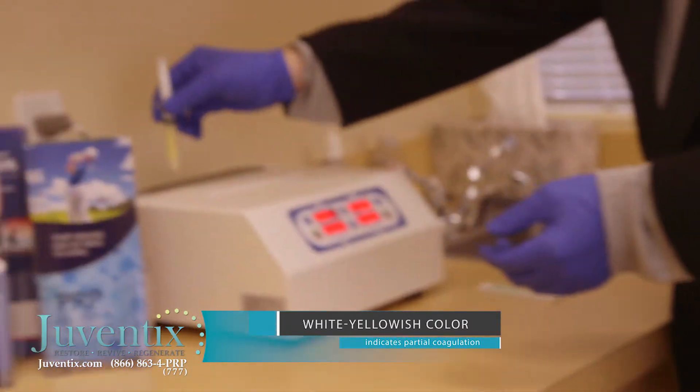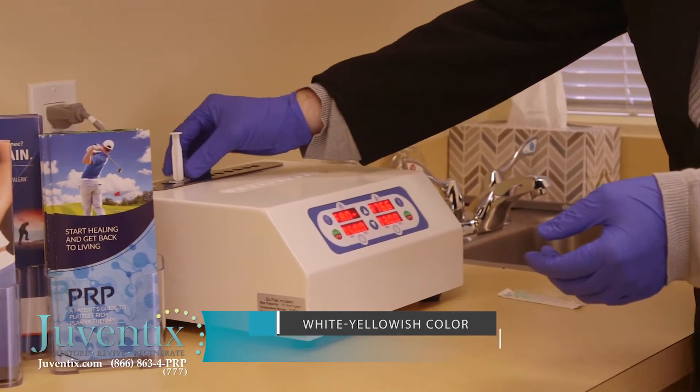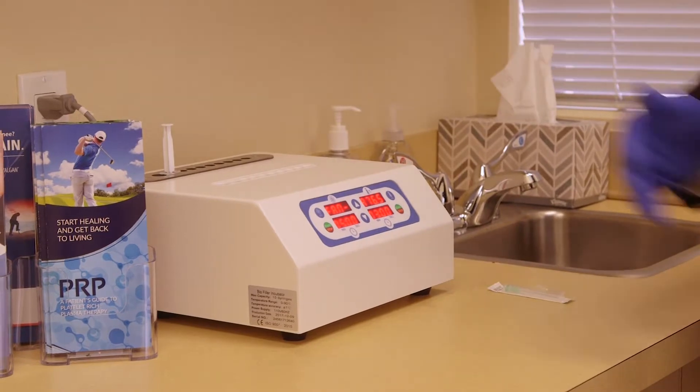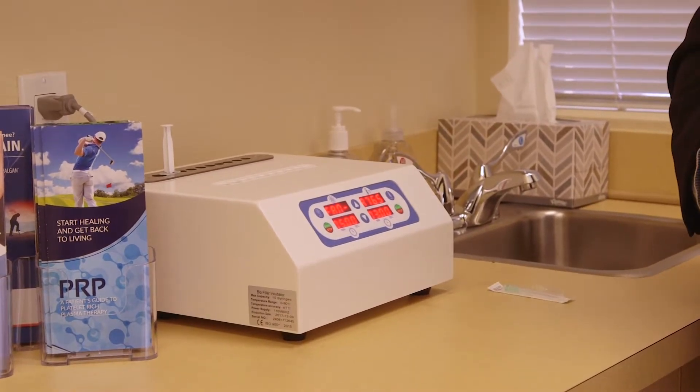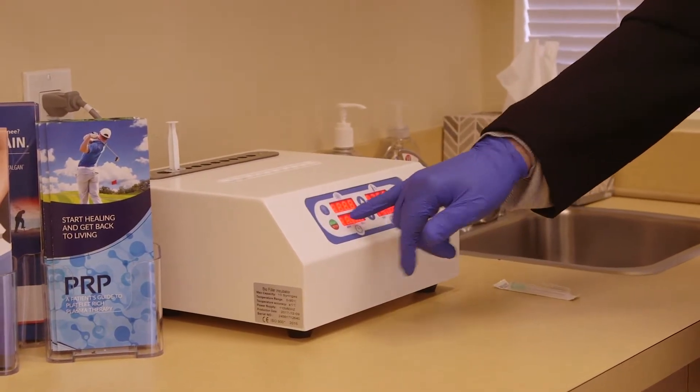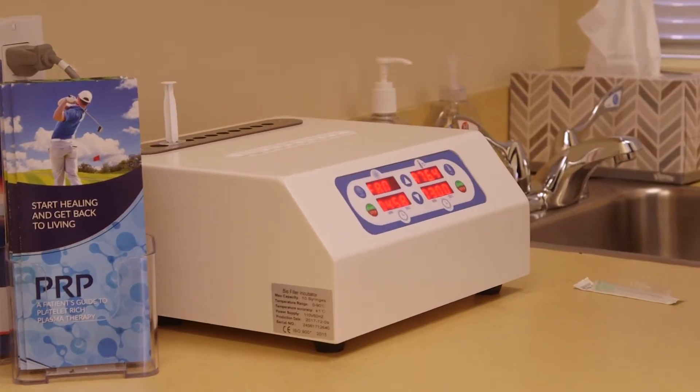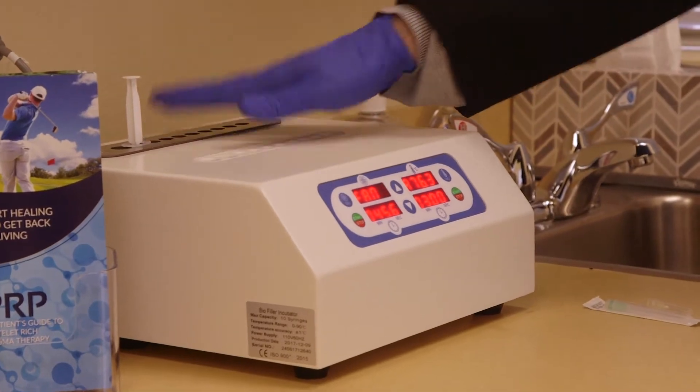Take the plasma and move it to the cooling section of the device. This will stop the thrombin cascade so the coagulation process will discontinue and the product won't get too thick. We have it set for five minutes of cooling time. Press start and it will cool this sample.